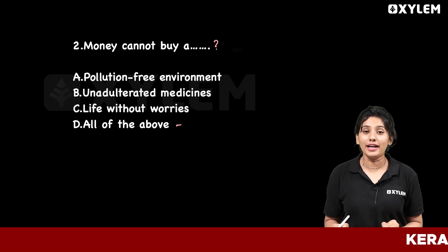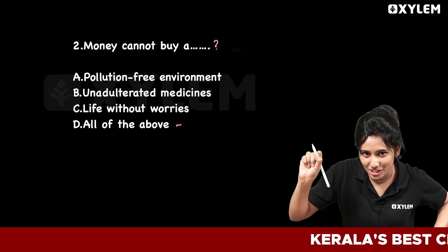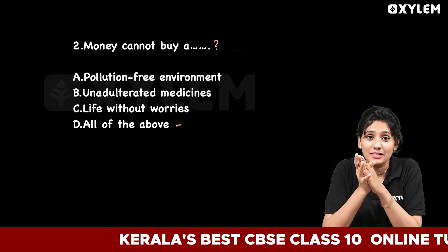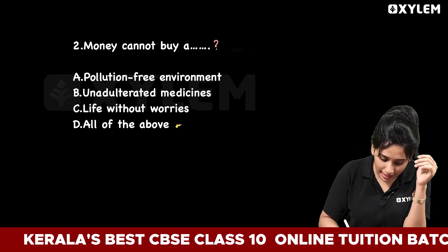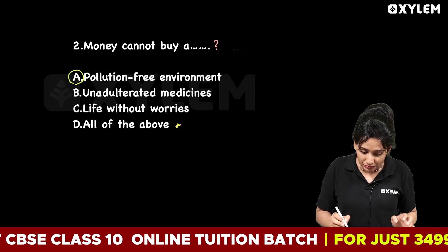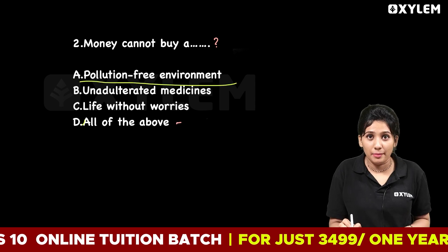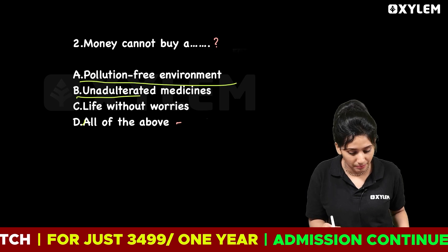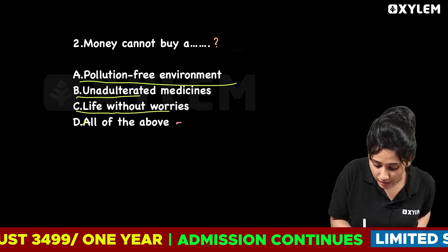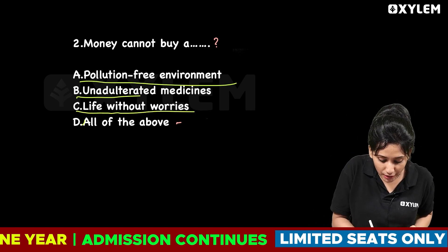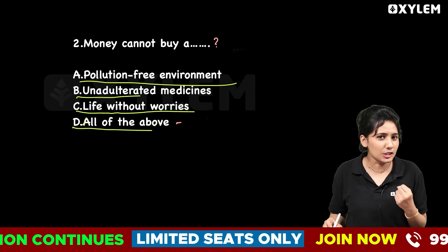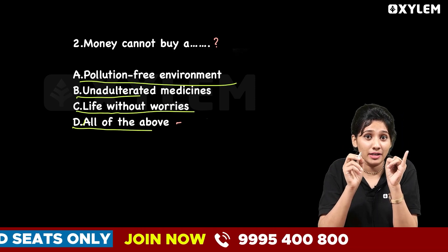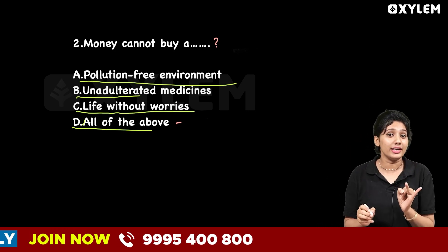Second question: Money cannot buy a dash. Option A: A pollution-free environment. Option B: Unadulterated medicines. Option C: Life without worries.